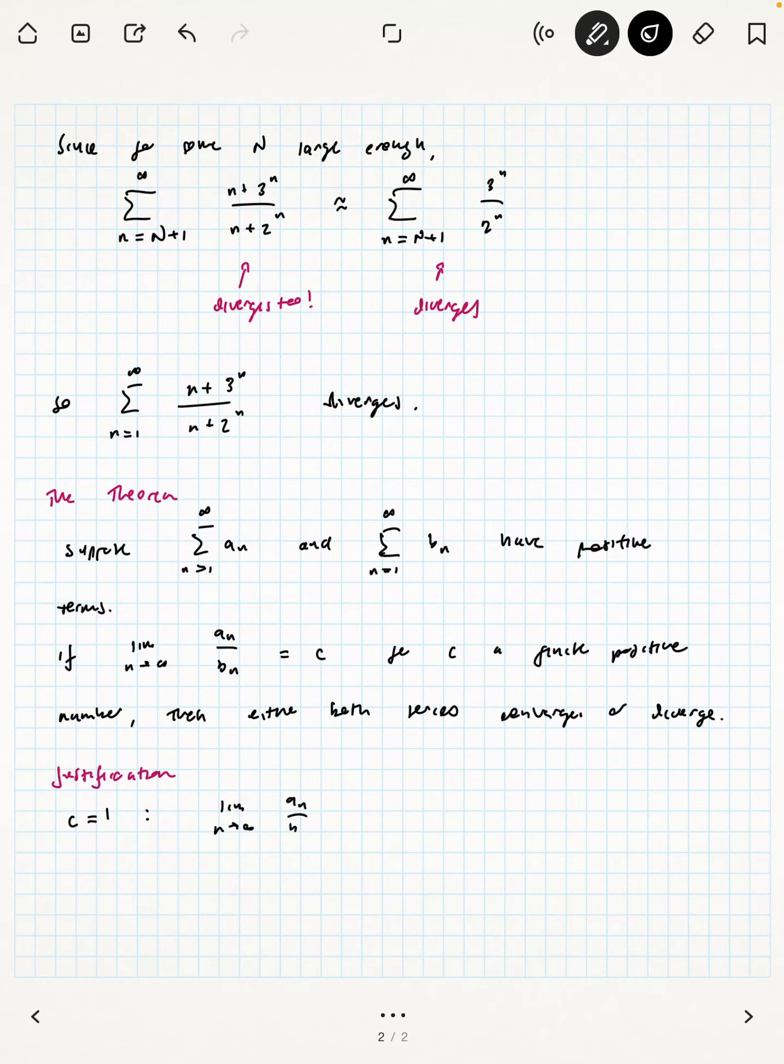So intuitively, thinking about just the c equals 1 case. Limit as n goes to infinity of a sub n over b sub n equals 1 can roughly mean a sub n is approximately equal to b sub n eventually. There's that word again, eventually.